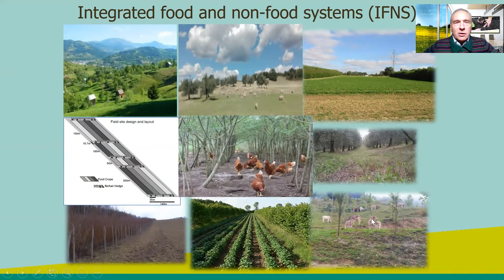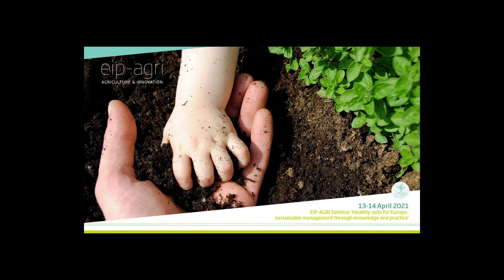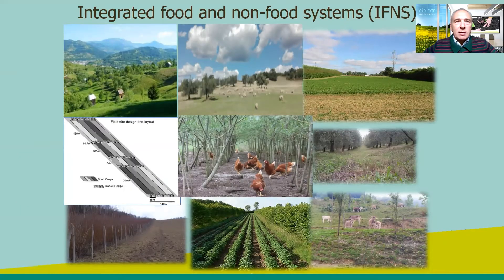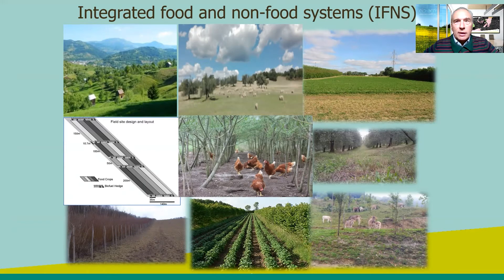Diversification covers also non-food systems. We had the example of integration of food and non-food systems — integrating production of crops and animals with the production of trees for paper production, for instance — but also the integration of circular economy through the spreading and recycling of waste.